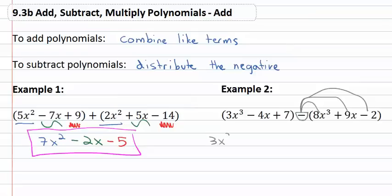The first polynomial then stays the same as 3x cubed minus 4x plus 7. The second polynomial though, distributing the negative, the opposite of 8x cubed is negative 8x cubed. The opposite of 9x is negative 9x, and the opposite of negative 2 is positive 2.